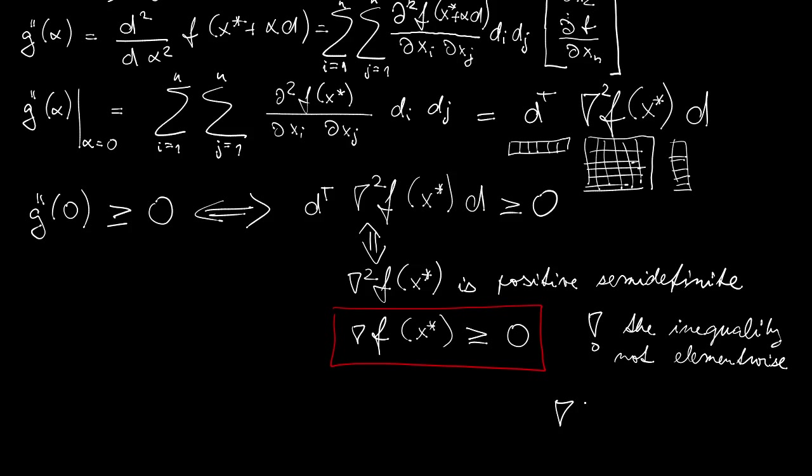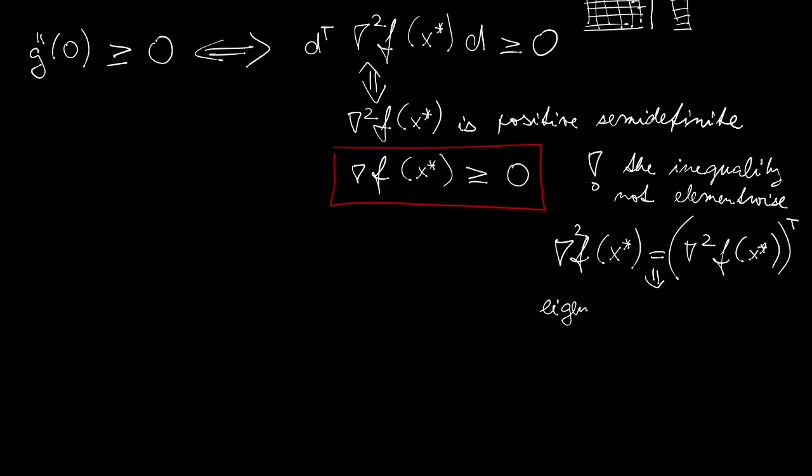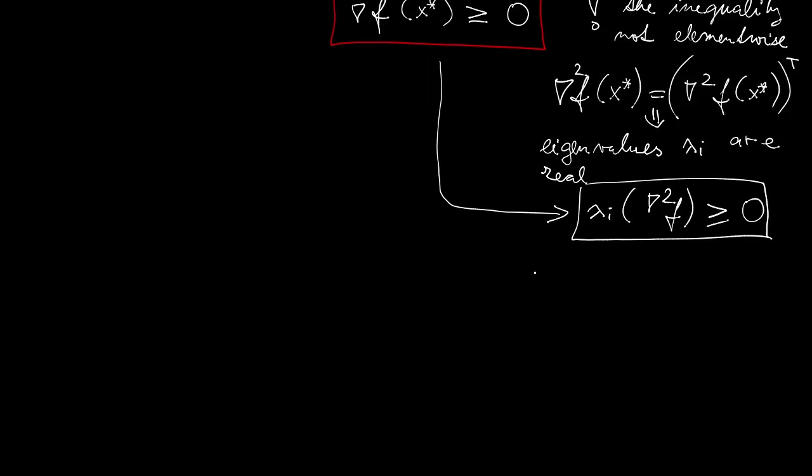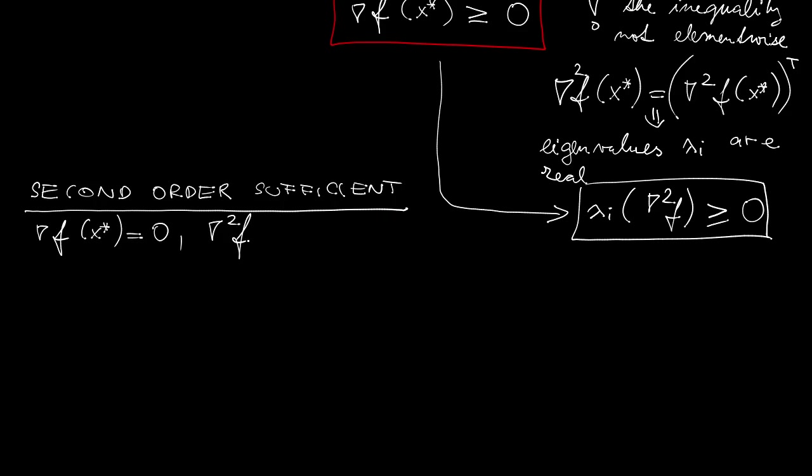But what does it mean that a matrix is non-negative? For sure it does not mean that we investigate non-negativity of each individual element. Note that for symmetric matrices, which is certainly the case for our Hessian, then the so-called positive semi-definiteness translates to the condition on the eigenvalues. Because the eigenvalues are real, so it makes sense to compare them against 0. So positive definiteness of Hessian amounts to non-negativity of its eigenvalues. And similarly the second order sufficient conditions. Gradient vanishing and Hessian strictly non-negative, which again we read as the Hessian being positive definite, that means the eigenvalues are strictly positive.